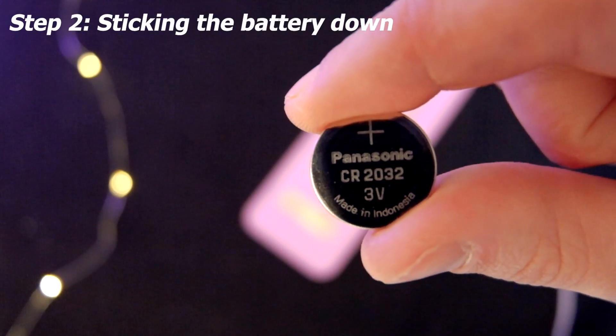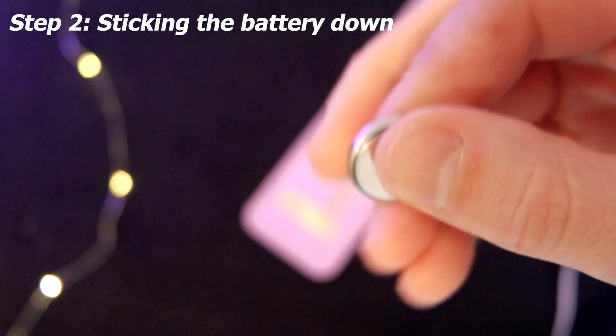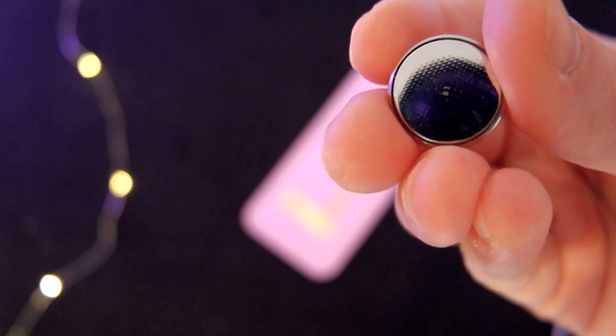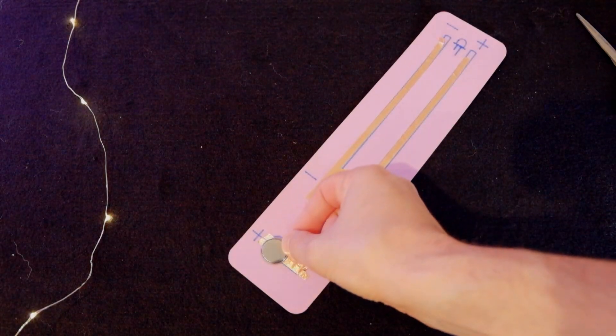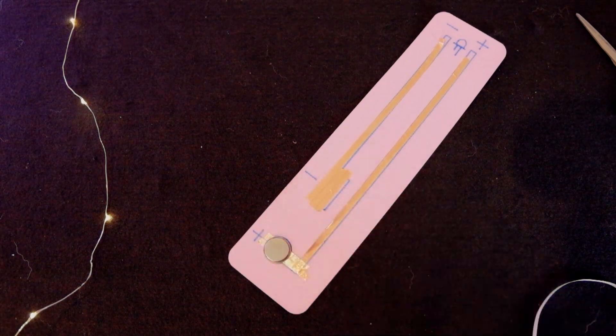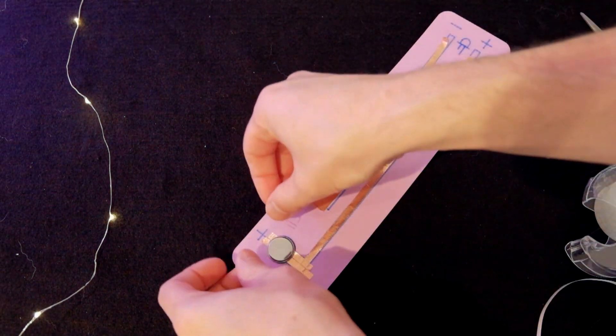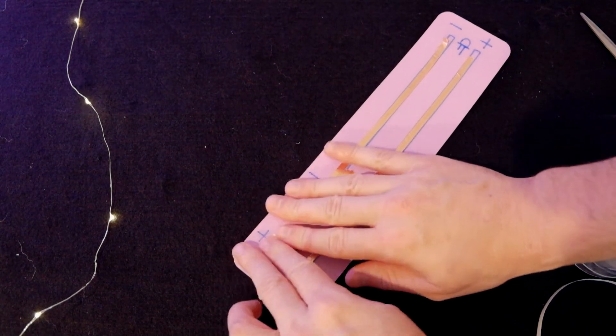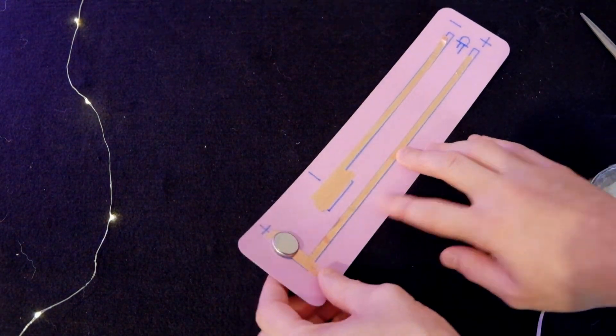Next, the battery needs to be stuck down with the positive side facing down. Use a small piece of tape and stick it down on one edge, allowing for the battery to still be able to touch the copper tape when folded over.